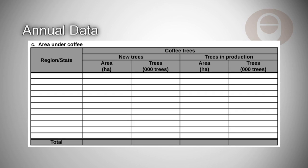The organisation should be informed about the number of trees with respective area in production and the number of new trees with respective area not yet in production. The area under coffee should be reported in hectares, so that it is possible to calculate the productivity per hectare and the yields achieved in the country.